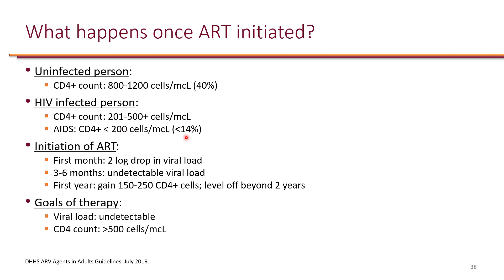Alternatively, if the percentage of lymphocytes that are CD4 is 14% or less, that also constitutes AIDS. Once we initiate ART, within the first month — within 30 days — you should expect a 2-log drop in viral load. For example, if the viral load is 100,000, a 2-log drop means removing two zeros, bringing it to 1,000. Then, by 3 to 6 months, you should have an undetectable viral load, because current ARTs are highly effective.